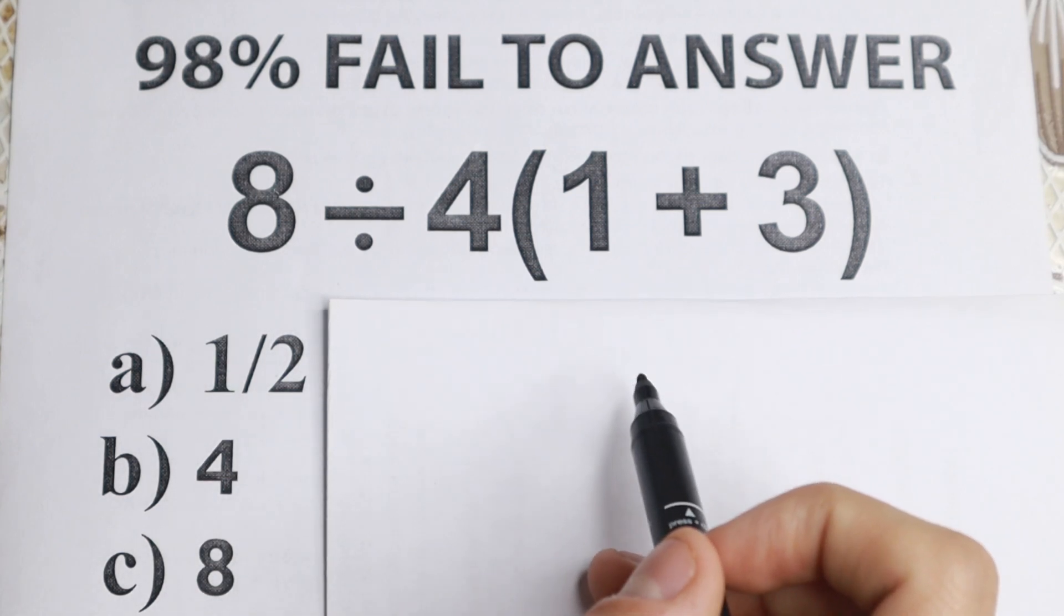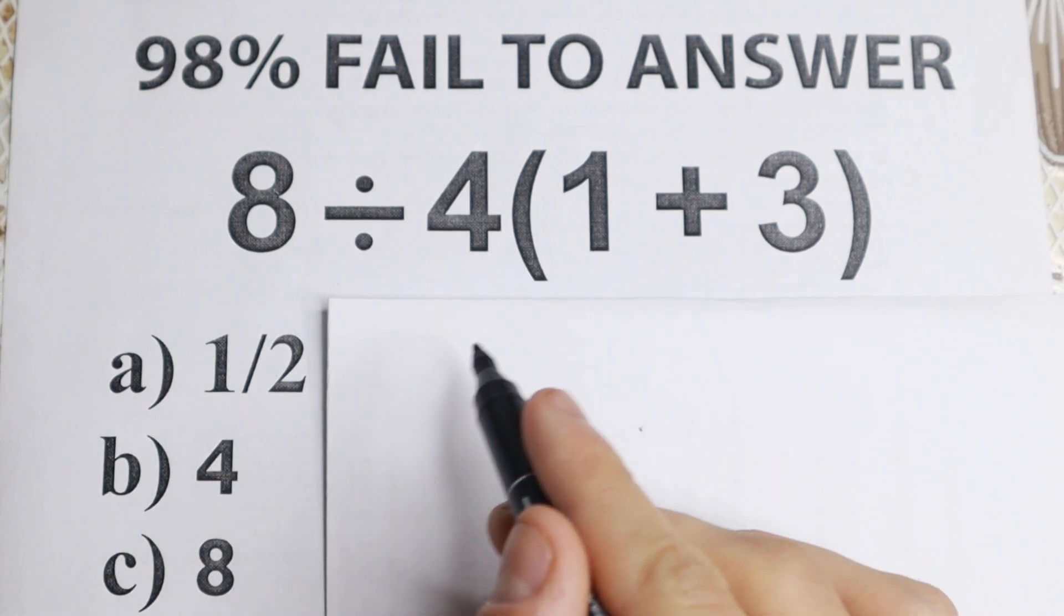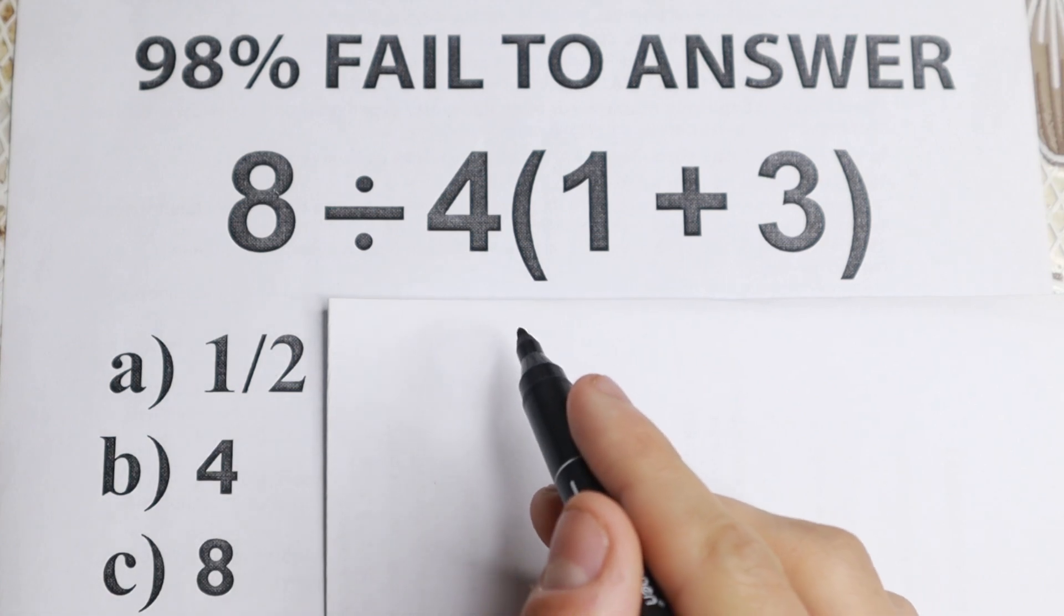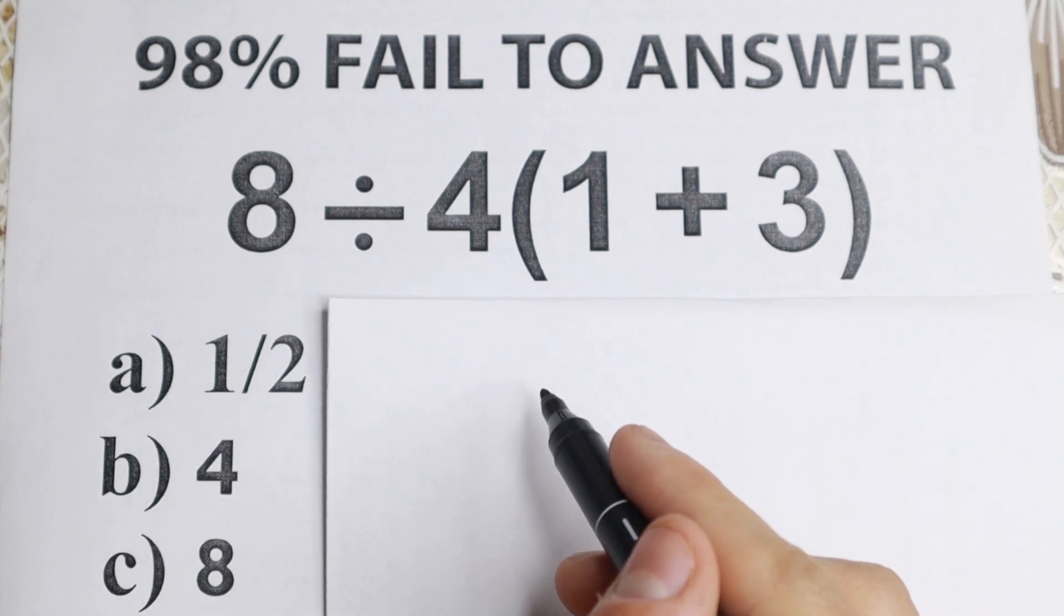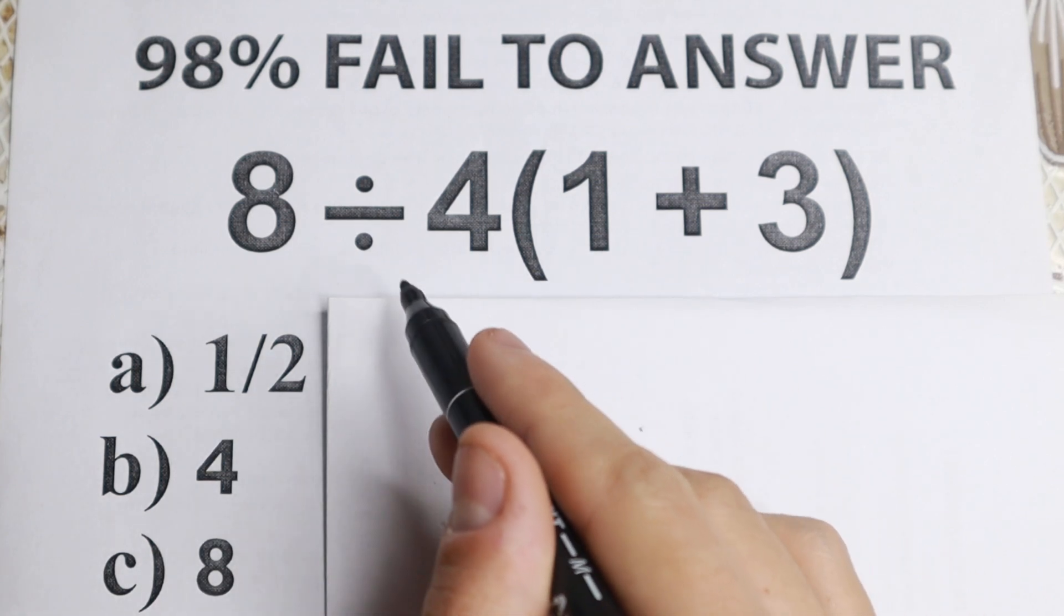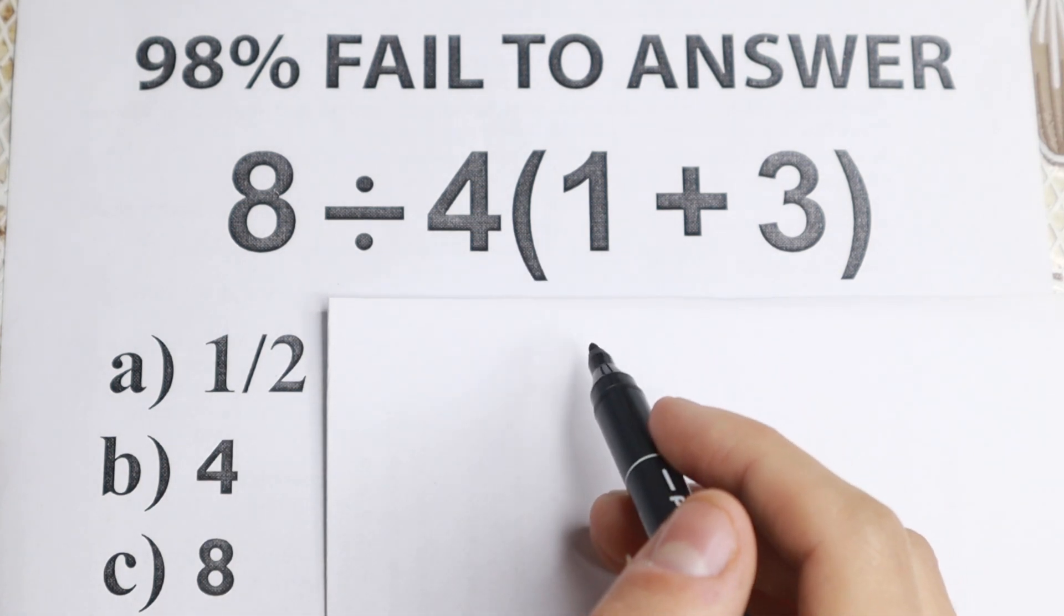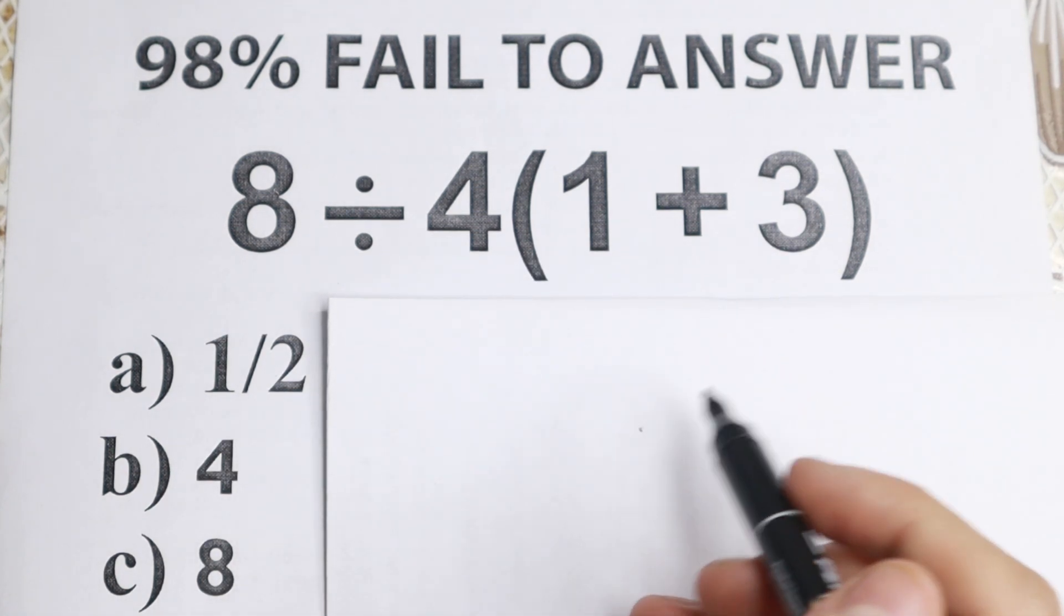8 divided by 4 and in parentheses is 1 plus 3. As you can see, no huge numbers, no squares, cubes. So what is the answer to this problem? Of course most of you out there are like, yes I can handle this, this is basic division, basic multiplication, basic addition, I can easily solve it.